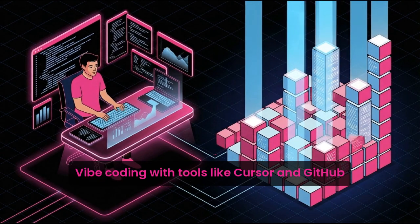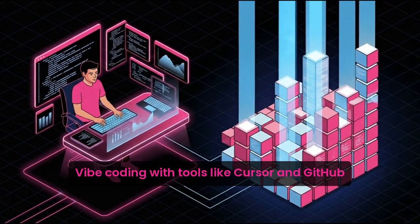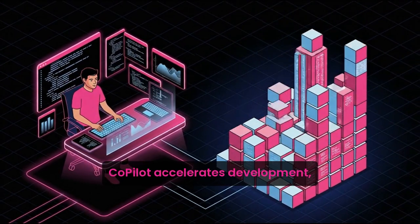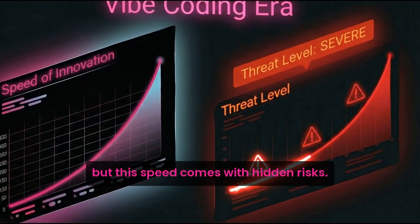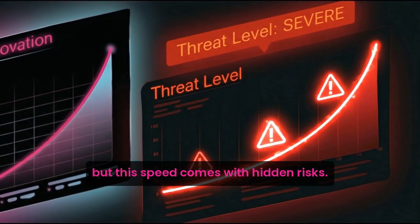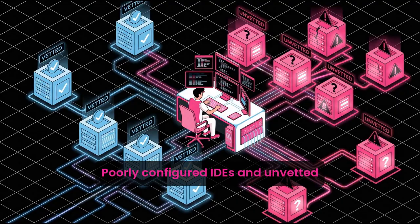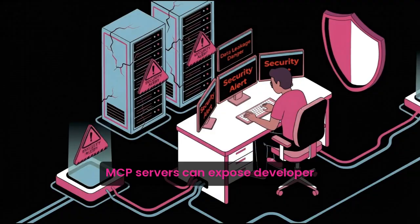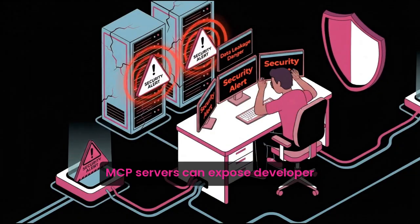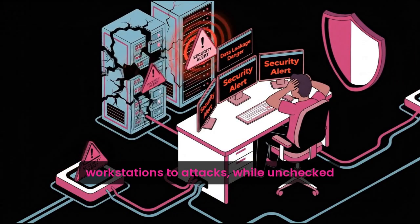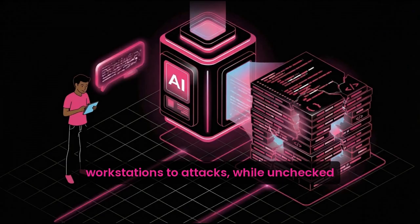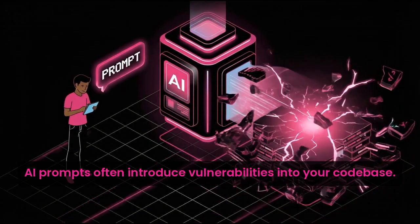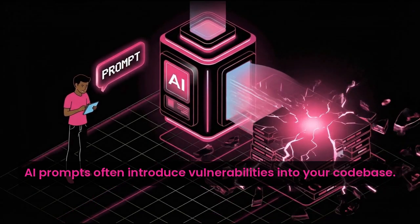Vibe coding with tools like Cursor and GitHub Copilot accelerates development, but this speed comes with hidden risks. Poorly configured IDEs and unvetted MCP servers can expose developer workstations to attacks, while unchecked AI prompts often introduce vulnerabilities into your codebase.